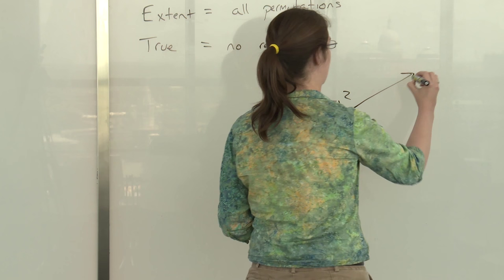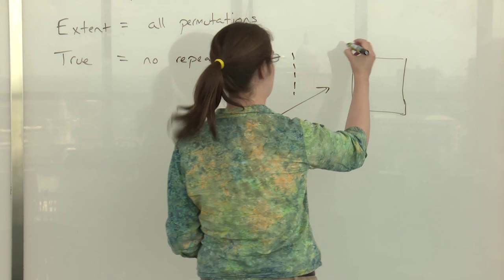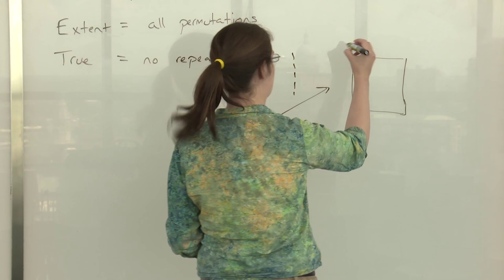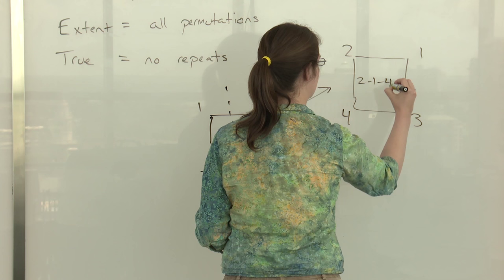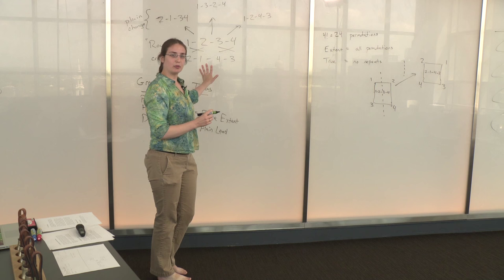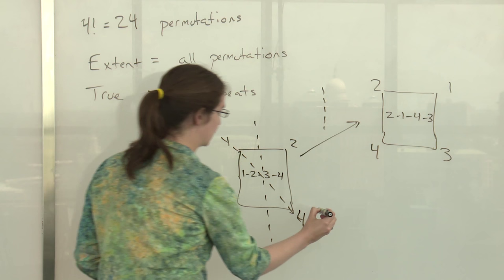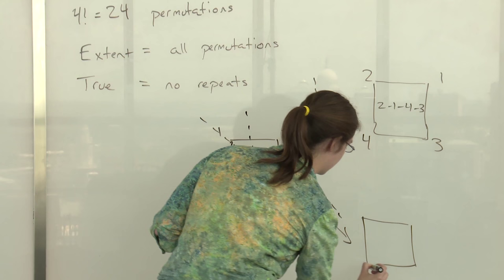So if I do that reflection then what I end up with is two one four three, which is exactly the order that we got by doing this cross change starting from one two three four. There's another line I can reflect around. I can also reflect around this diagonal line and if I do that diagonal reflection then the square I end up with looks like this: one three two four.